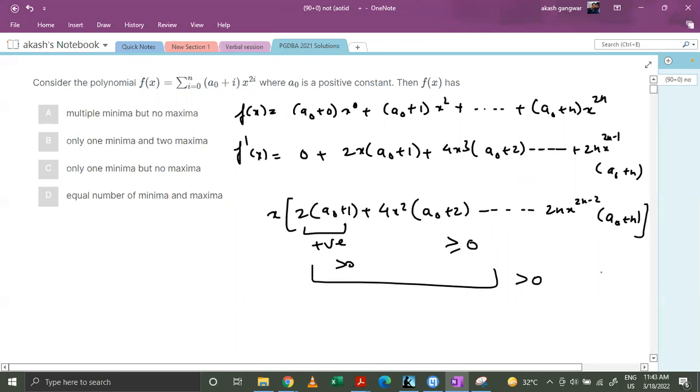Now to make this entire expression equal to 0, the only possibility we have is x equals 0. So the only critical point we got is x equals 0.